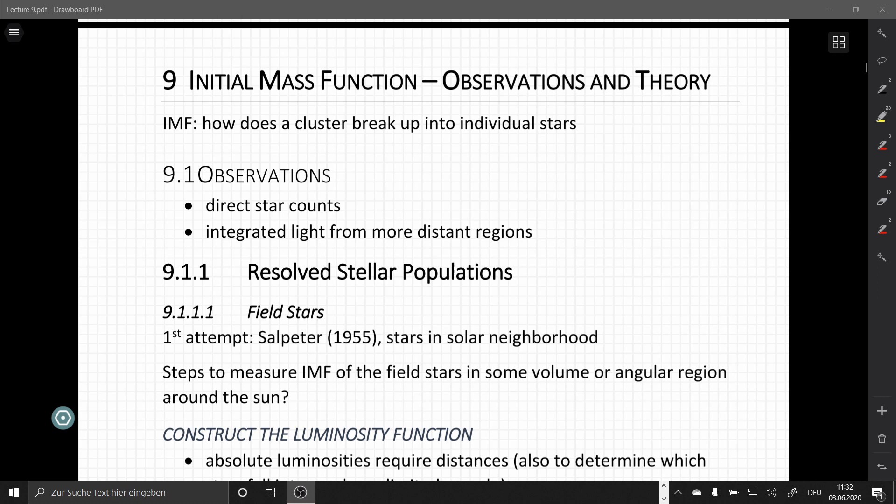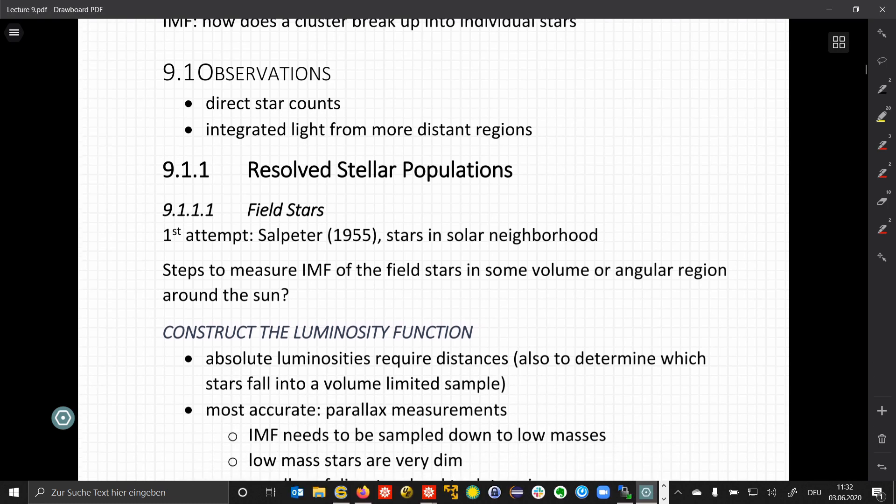So let's start with the section on observations of resolved stellar populations. This is where we can directly count stars. The first attempt has been done in 1952 by Salpeter, who studied the stars in the solar neighborhood. And we will discuss the necessary steps to measure the initial mass function of the field stars in some given volume or in some given angular region around the sun.